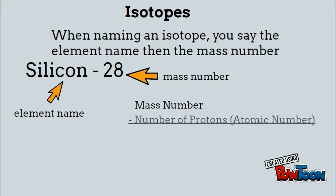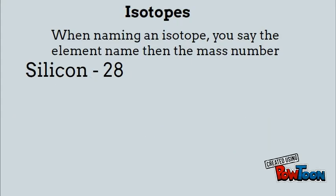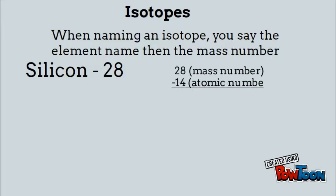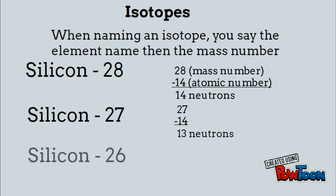To find the number of neutrons, you take the mass number and subtract the number of protons — that gives you the number of neutrons. For silicon-28, you take 28, which is the mass number, subtract 14, which is the atomic number for silicon, and 28 minus 14 is 14 neutrons. For silicon-27 and silicon-26, you find the neutrons in a very similar fashion — so here you have 13 neutrons and then 12 neutrons.